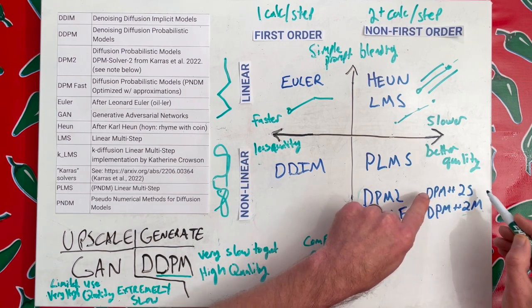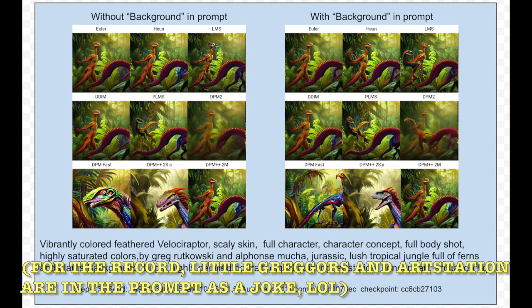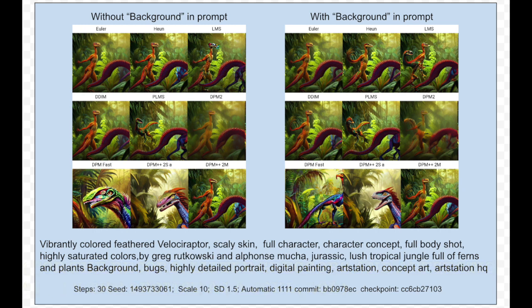Here are all of the samplers in action. Pause it to get a better look. I did it with and without background in the prompt just to prove a point, that the DPM2, Fast, and Ancestral tend to blur or mute out the background. It is my belief that's because it's doing the denoise and image generation in the same step. It's more focused on the prompt, what's in the foreground, and the rest tends to become more noise, whereas the 2M doesn't have that problem because the multi-step breaks up that generation and denoising into separate steps.